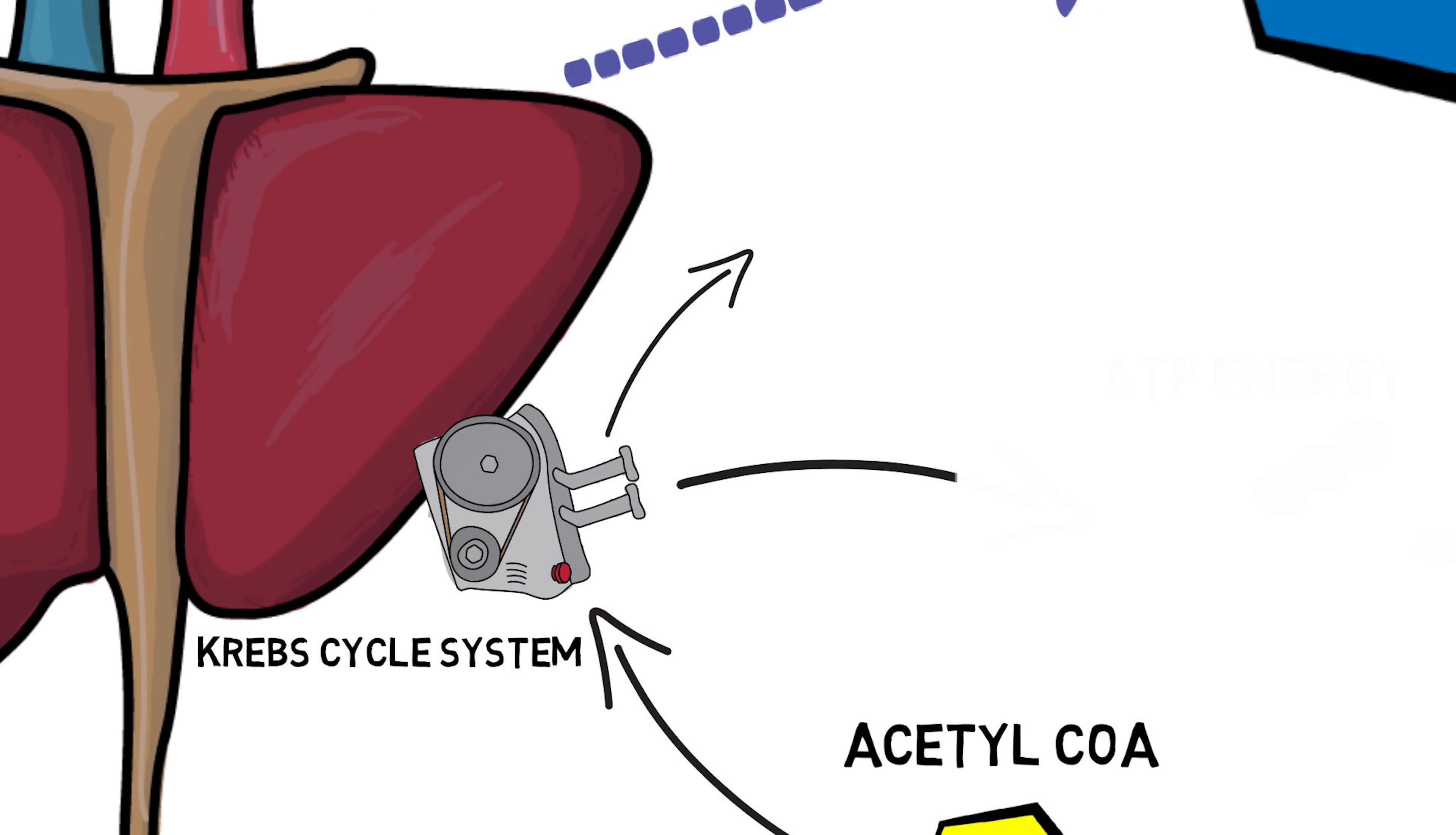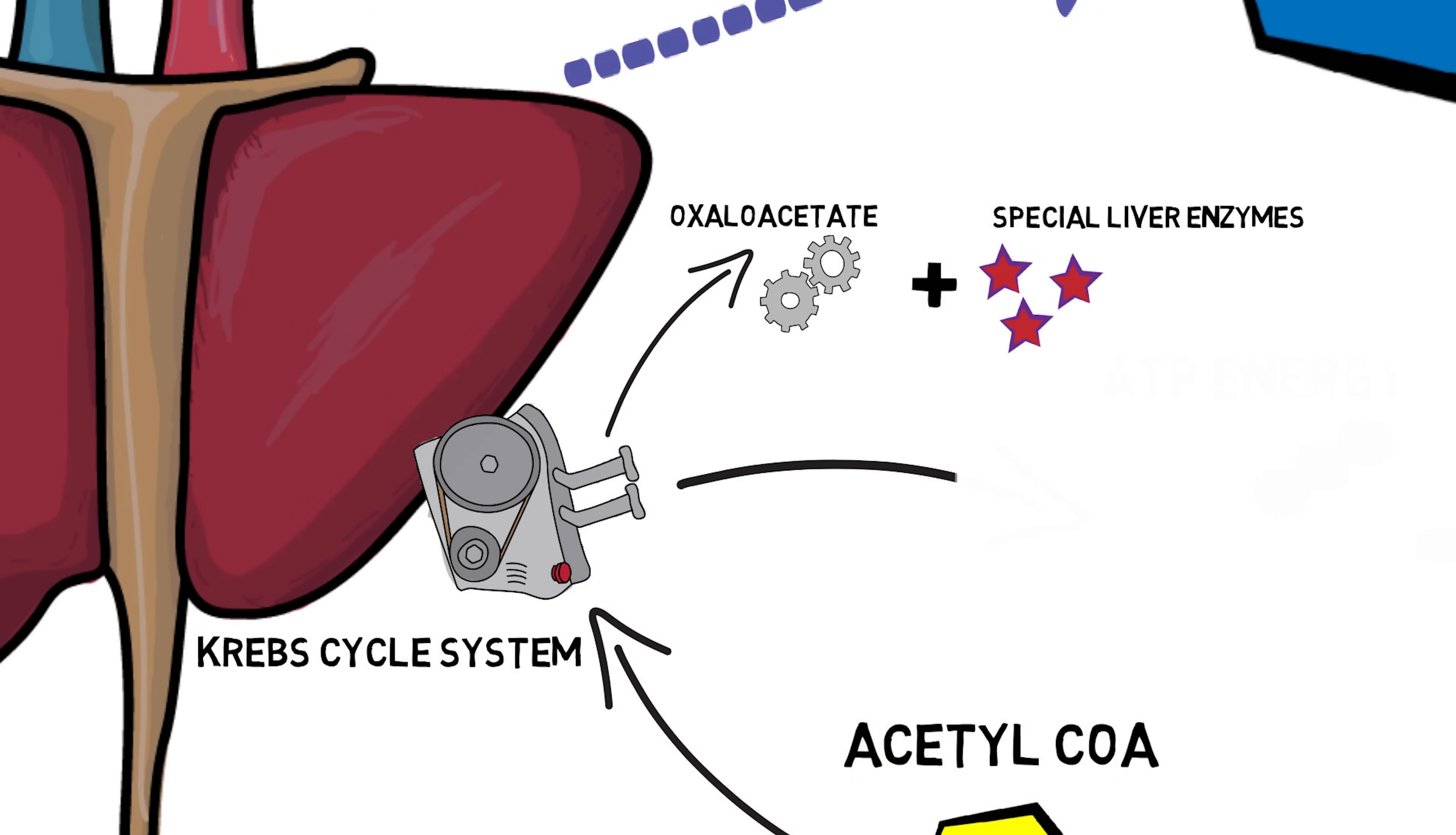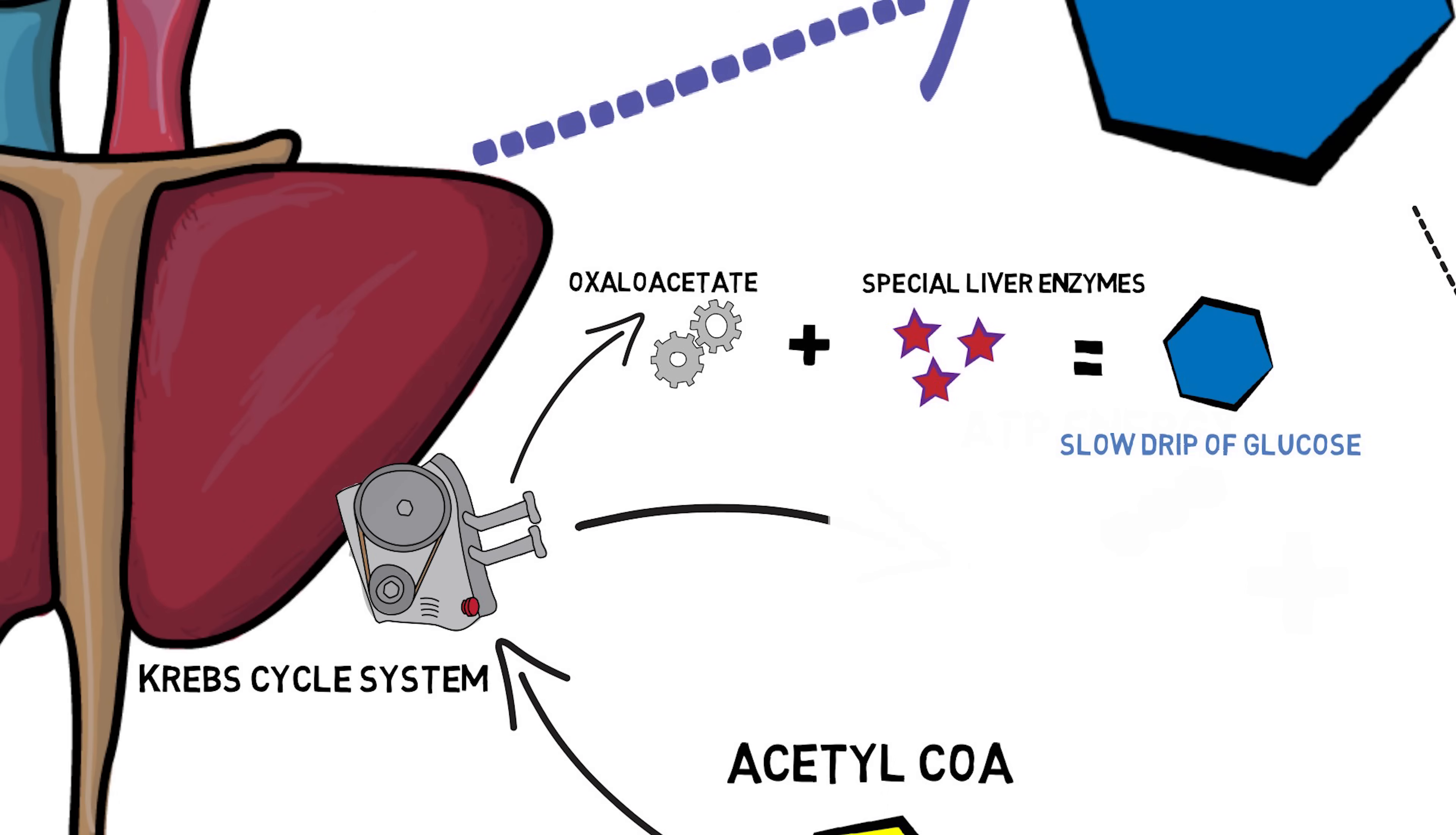Depletion of liver glycogen occurs over a period of 12 to 24 hours, though this varies greatly with activity levels. So what about once that runs out? Well, this is where things get really interesting.